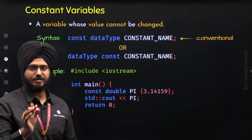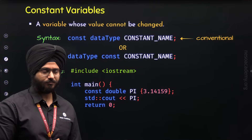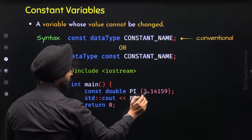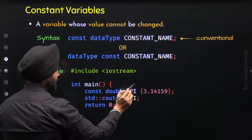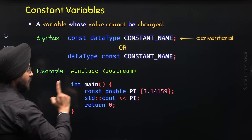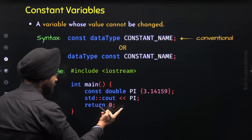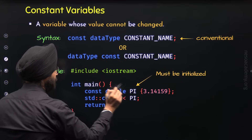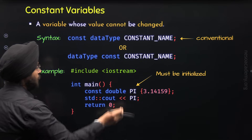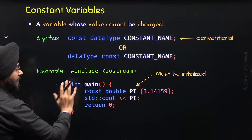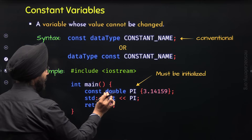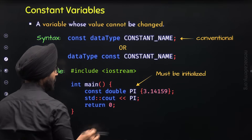I have used braces and within these braces I have provided the value 3.14159, so this variable has been initialized to 3.14159. One important thing to emphasize is that it is important to initialize a constant variable — a constant variable must be initialized. We cannot use a constant variable without initializing it. With the help of cout, I am printing the value of this constant variable pi, and when we execute this program, we get the output 3.14159.